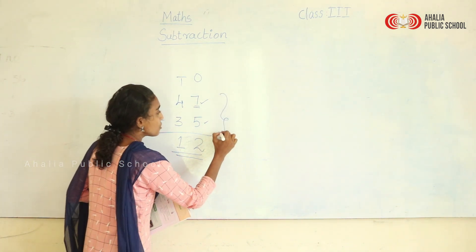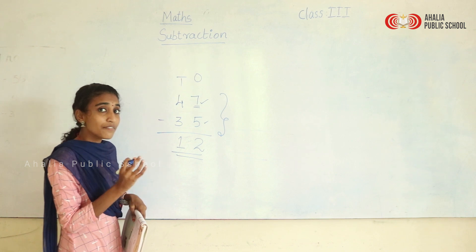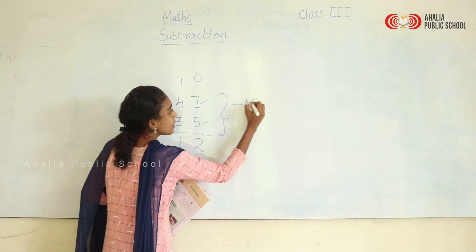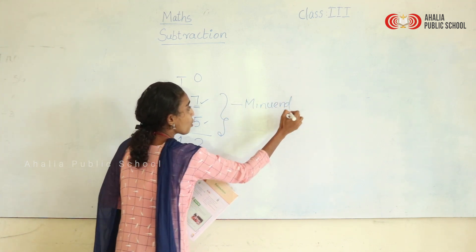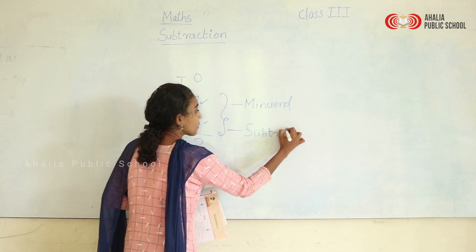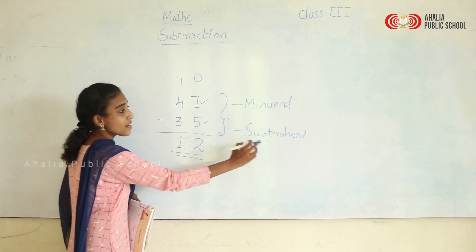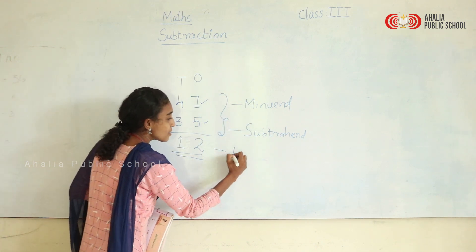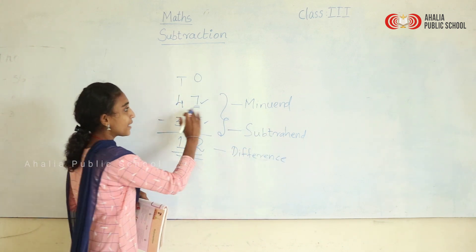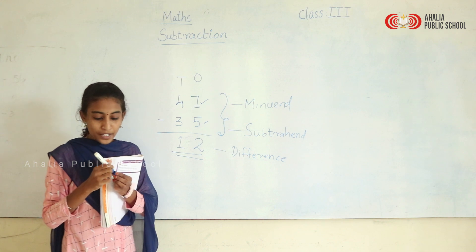So listen, children. Here 47 and 35 are the two numbers used in subtraction and the answer is 12. The first number is called the minuend, the second number is called the subtrahend, and the answer is called the difference. Minuend, subtrahend, difference — this is what you have to keep in mind.